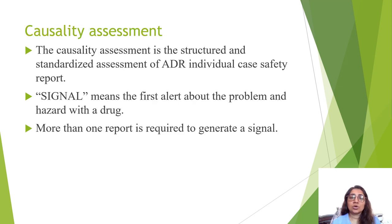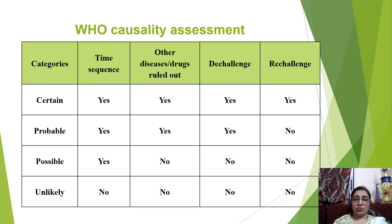Causality assessment is the structured and standardized assessment of an adverse drug reaction individual case safety report. A signal means the first alert about a problem or hazard with a drug — more than one report is required to generate a signal. There are four categories: certain, probable, possible, and unlikely. Parameters include time sequence — the drug was taken and the reaction appeared during that time — and ruling out other diseases or drugs as the cause.